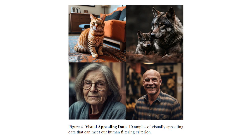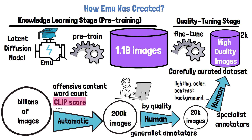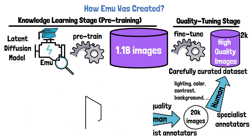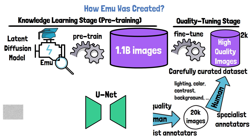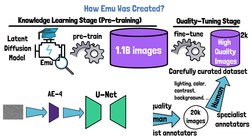If we zoom in a bit into the latent diffusion model, we will notice it is slightly different than usual. Latent diffusion models have a U-Net that learns to predict the noise in an image, which is then removed in each iteration. The U-Net works in the latent space, and so before passing the input through the U-Net it is encoded by an autoencoder. The commonly used autoencoder has 4 output latent channels, and the researchers found that increasing the number of channels to 16 significantly improves reconstruction quality.